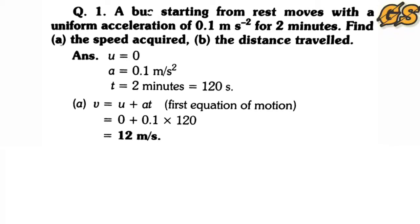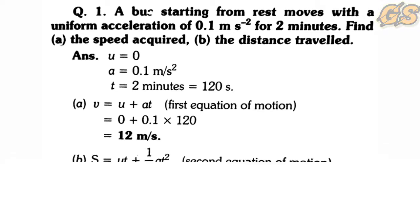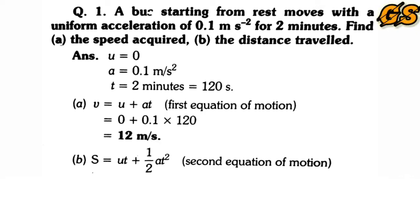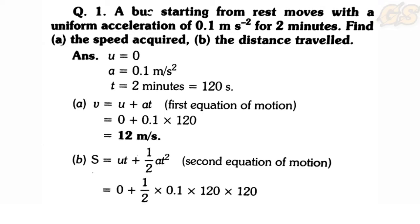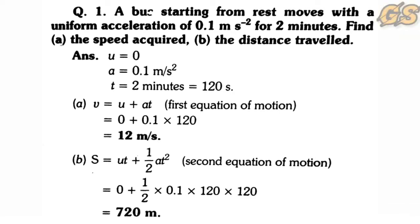Now we find the distance traveled. Using the second equation of motion: s = ut + ½at². Substituting values: s = 0 + ½ × 0.1 × 120 × 120. Solving this gives s = 720 meters. So the distance traveled in 2 minutes is 720 meters.